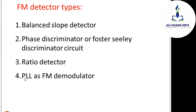To recover the original signal from FM, we use a PLL as FM demodulator — PLL stands for Phase Lock Loop. There are four types of FM detectors in total, and the PLL as FM demodulator is one of them.